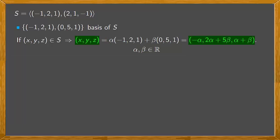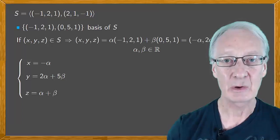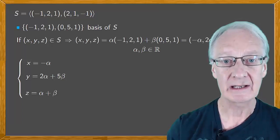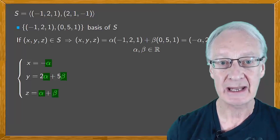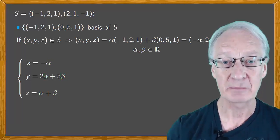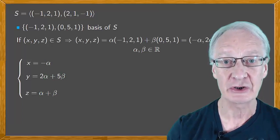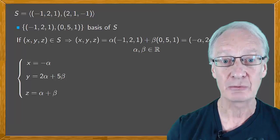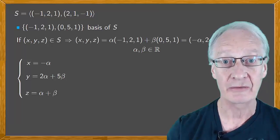equating component by component we obtain x = -α, y = 2α + 5β, and z = α + β, where α and β are in R. These are the parametric equations, but we want the Cartesian equations. Now we work from top to bottom. We clear each of the parameters and substitute in the equations below, and repeat the process leaving only the equations that don't include parameters. These will be the Cartesian equations of the subspace.